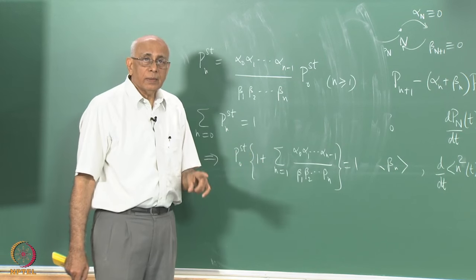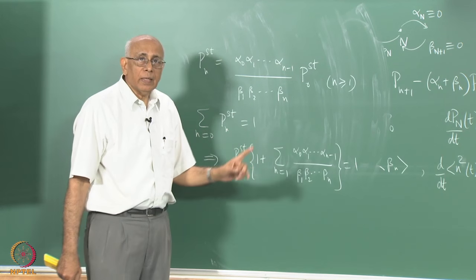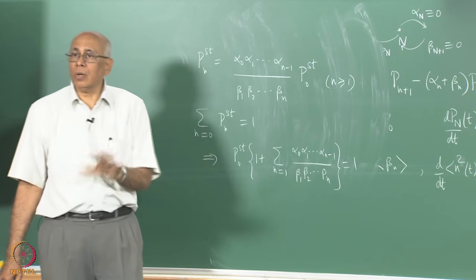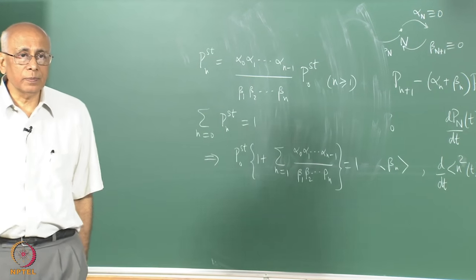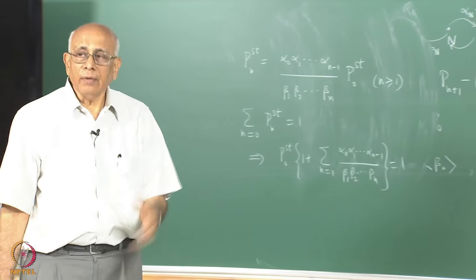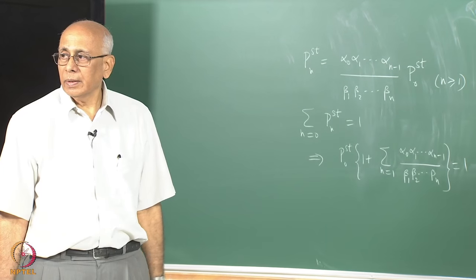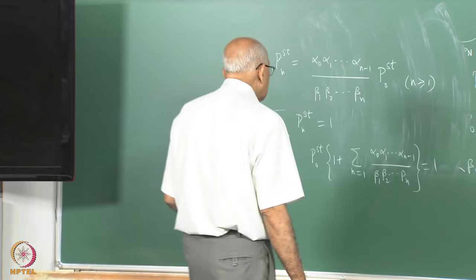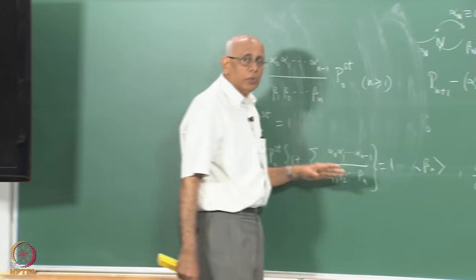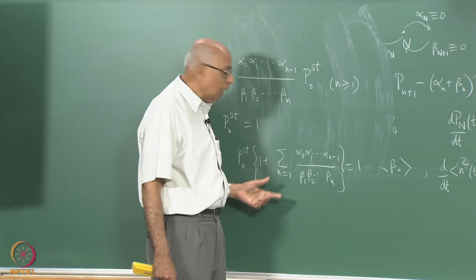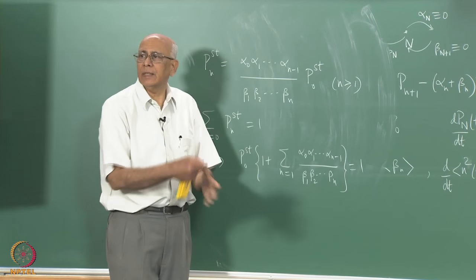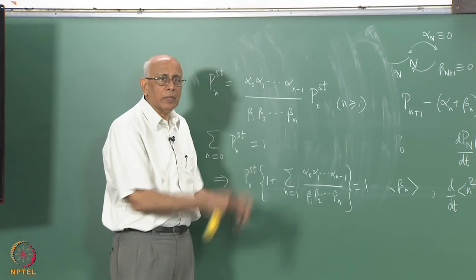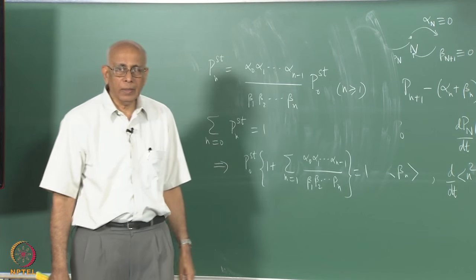Notice this result is valid without any assumption that the alphas are linear or constant in n. We have a lot of information on the stationary distribution directly — it's an algebraic function of all the rates, the alphas to the right and the betas to the left.